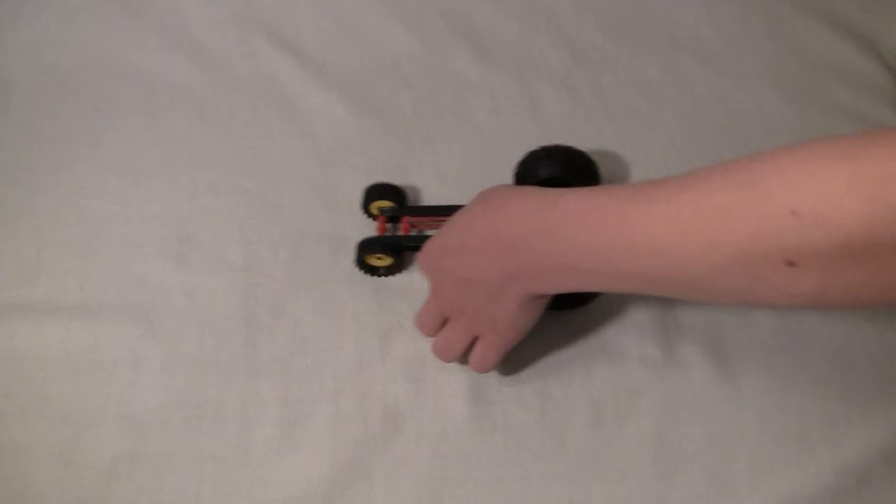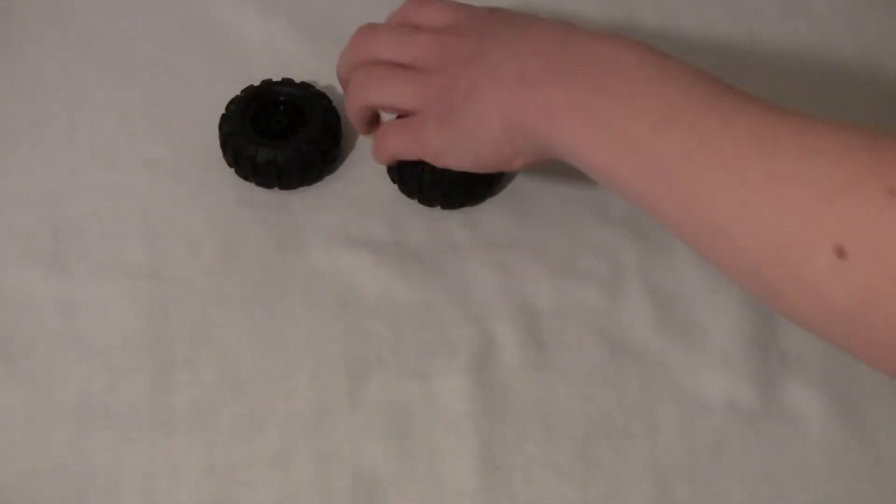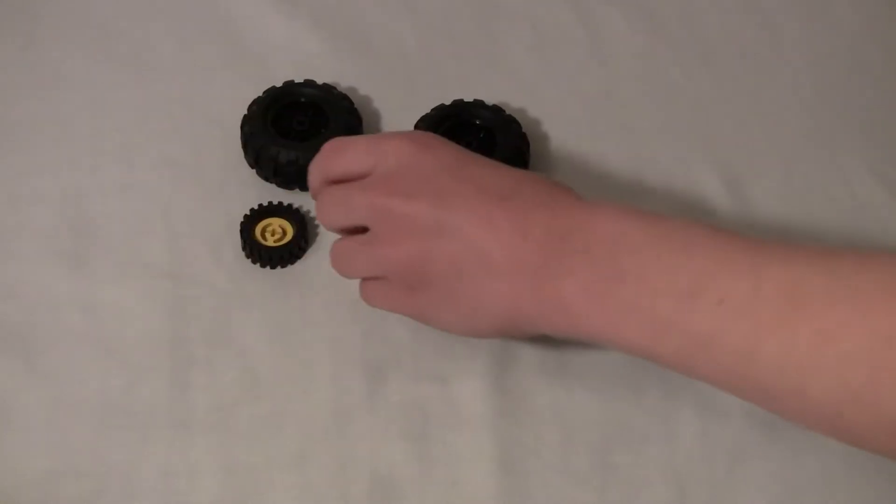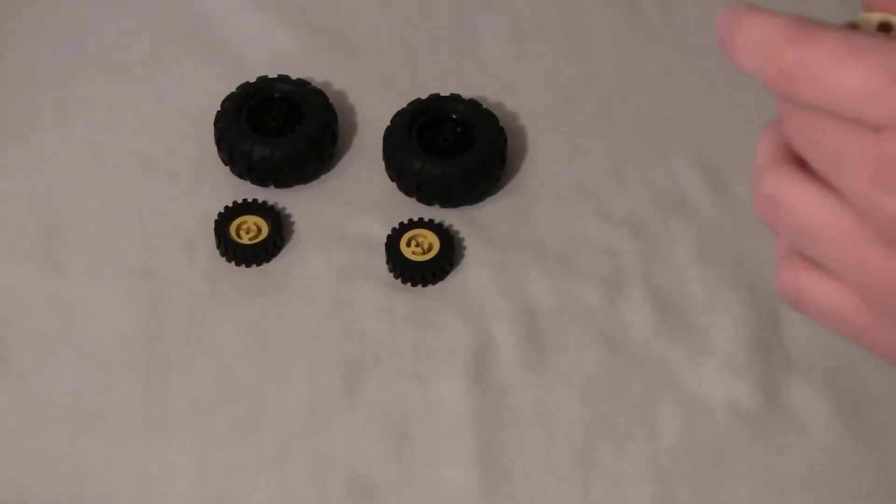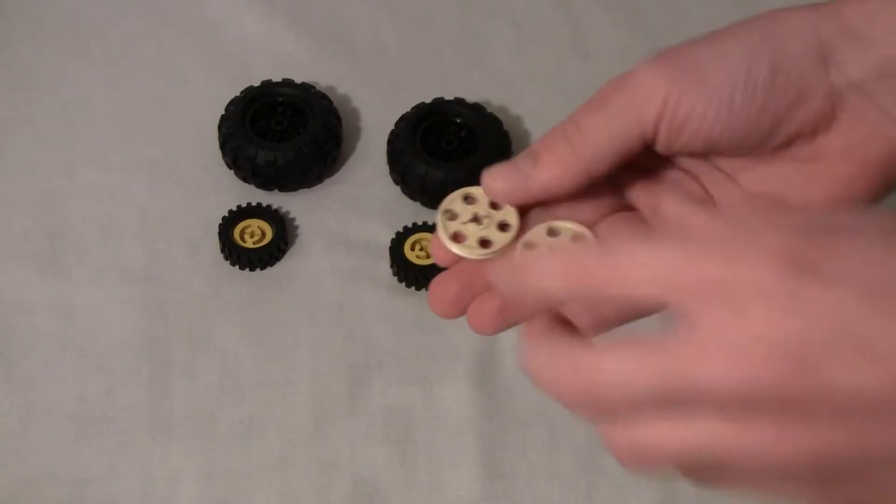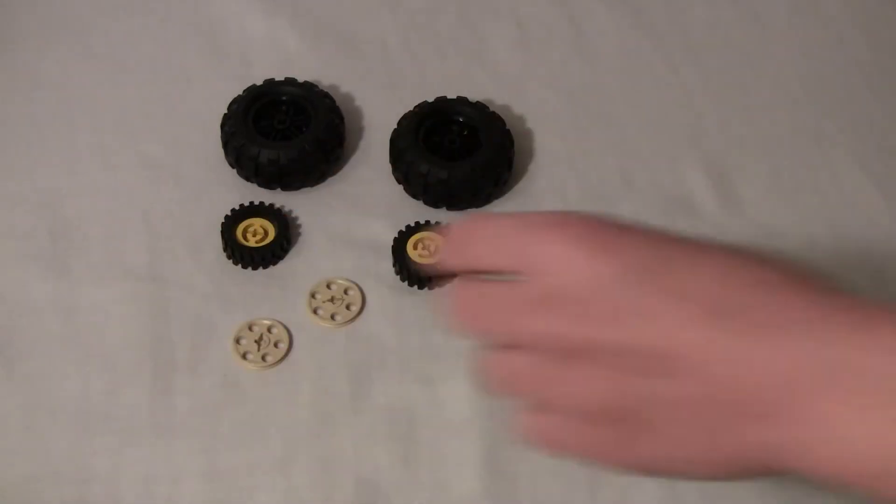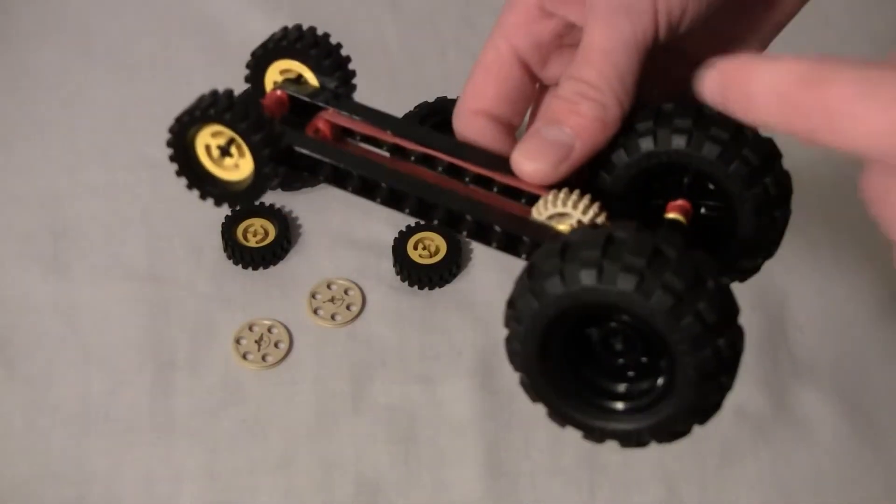So now I'm going to show you how to build it. You will need two large wheels and two smaller ones. You will need two of these, or in the other car, I use a gear.